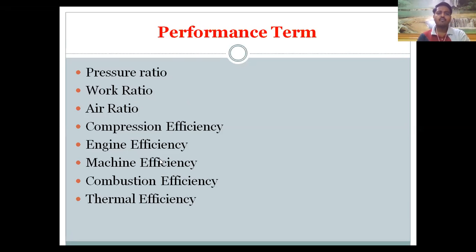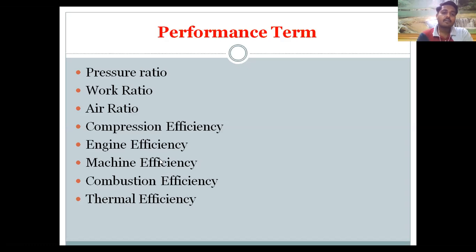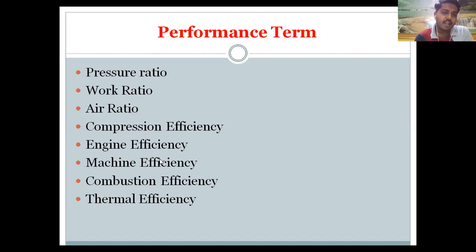Now for performance terms related to the gas turbine power plant. The first term is pressure ratio, which is the ratio of the highest to the lowest pressure in the cycle. The highest pressure is at the compressor discharge and the lowest pressure is at the compressor inlet. At the inlet we have low pressure, and after compression we get higher pressure at the outlet.